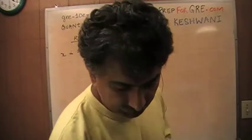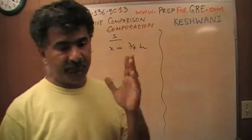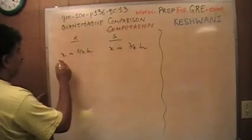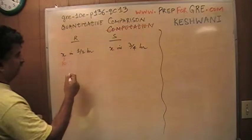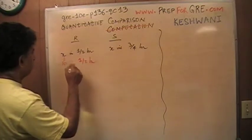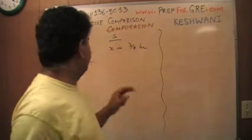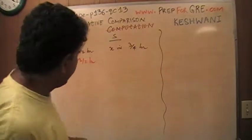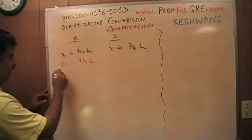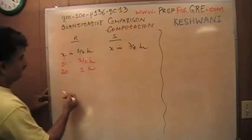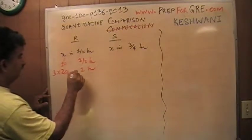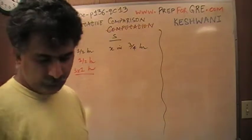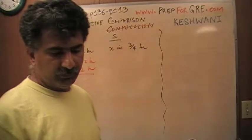Let me show you the plug-in method. I'm going to make up numbers — let's pretend X equals 10. Column A asks for the number of records completely pressed by R in three hours. So R does 10 in half an hour, 20 in one hour, and therefore 60 in three hours. Now column B asks for the number of records completely pressed by S in four hours.